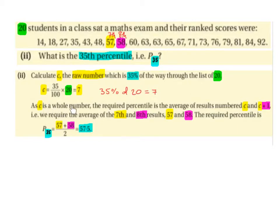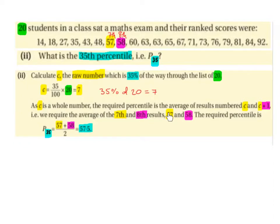As C is a whole number, the required percentile is the average of the results numbered C and C plus 1. That is, we require the average of the 7th and 8th results, 57 and 58.